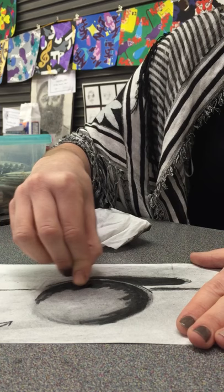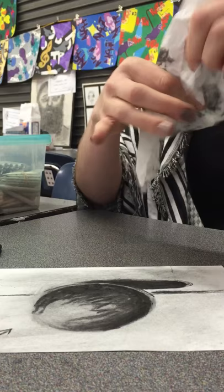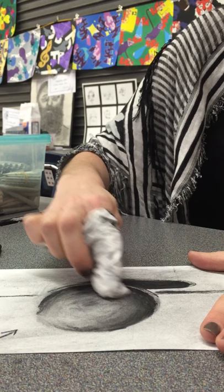It goes on very dark but if you notice when you go to blend it, it really lightens up. So take your tissue again and start blending it down, barely touching it very lightly. Because you'll notice everywhere you touch it's gonna really lighten up.